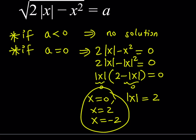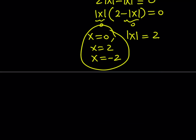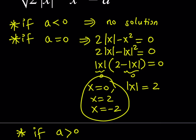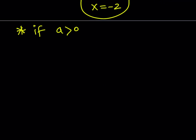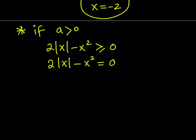Now let's consider when a is greater than 0. The equation is valid since the radical will be positive. We can square both sides, but first we need to verify the expression inside the radical is non-negative: 2|x| - x² ≥ 0. Squaring both sides gives us 2|x| - x² = a².